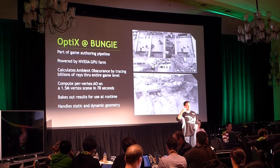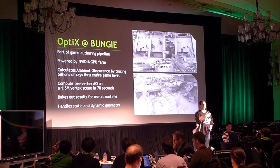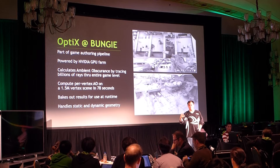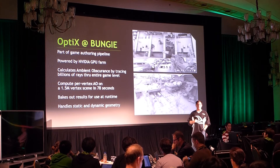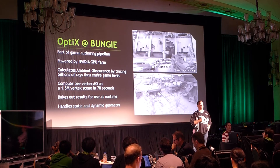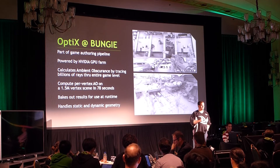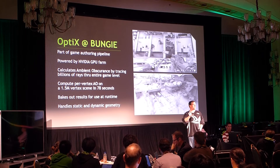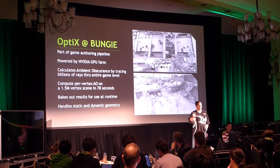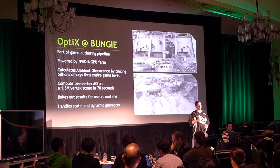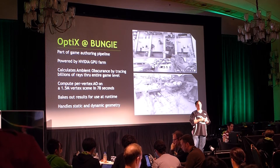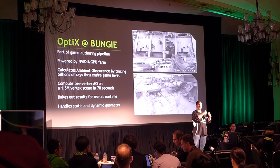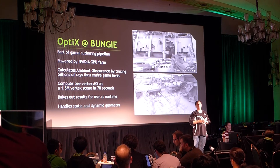You've probably heard NVIDIA say that lots of game developers use NVIDIA GPUs, but you might not know they use them in ways you might not have thought about — not just for game engine development, but as core authoring for their game itself. There's a GPU farm at Bungie cranking away calculating ambient obscurance. You can compute AO on a really complex scene in a little over a minute on this GPU farm — orders of magnitude faster than the alternatives. They bake it out for use at runtime so you can simulate real-time global illumination in Destiny.